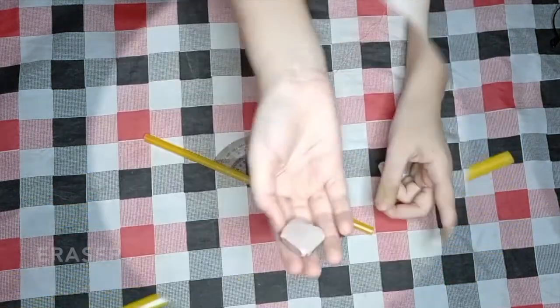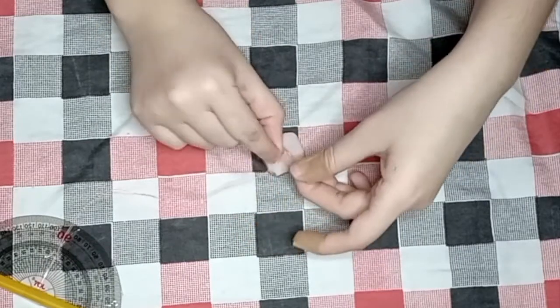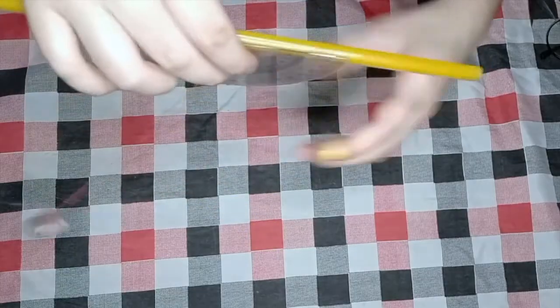And for the last step, strap or tie the eraser using the two ends of the thread that you taped earlier. Now, you have your DIY clinometer.